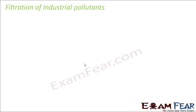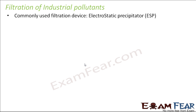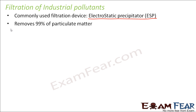Regarding filtration of industrial pollutants, we have quite a few filtration devices. One such common device is electrostatic precipitation. This device removes 99% of the particulate matter which comes out of industries. So if this device is installed within the factory, we get rid of 99% of the particulate matter and only 1% remains, which might come out with industrial emission. If you compare it with the scenario when there is no electrostatic precipitator, it is far better — the amount of pollution which was being created before has reduced significantly.